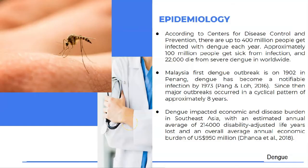Now let us move on to epidemiology. According to CDC, there are actually up to 400 million people who get infected with dengue each year. Approximately 100 million people get sick from infections and 22,000 died from severe dengue worldwide.